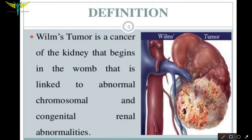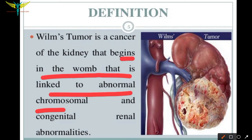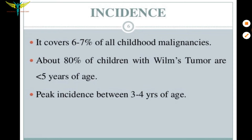Wilms' tumor is a cancer of the kidney that begins in the womb and is linked to abnormal chromosomal and congenital adrenal anomalies. It covers 6 to 7 percent of all childhood malignancies.